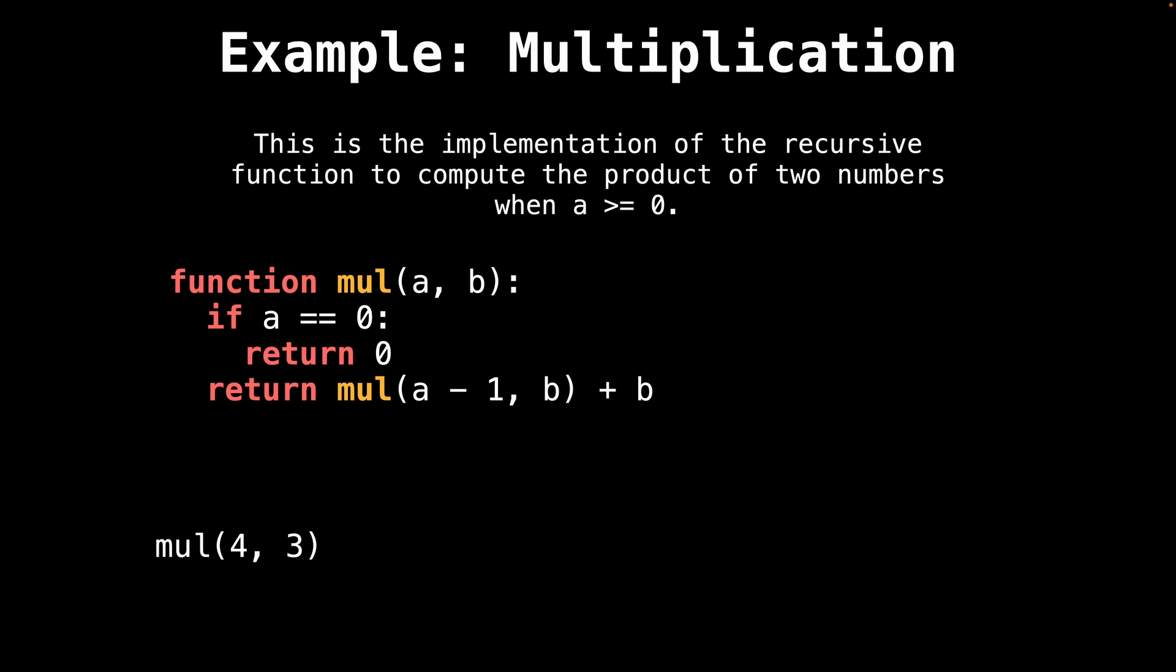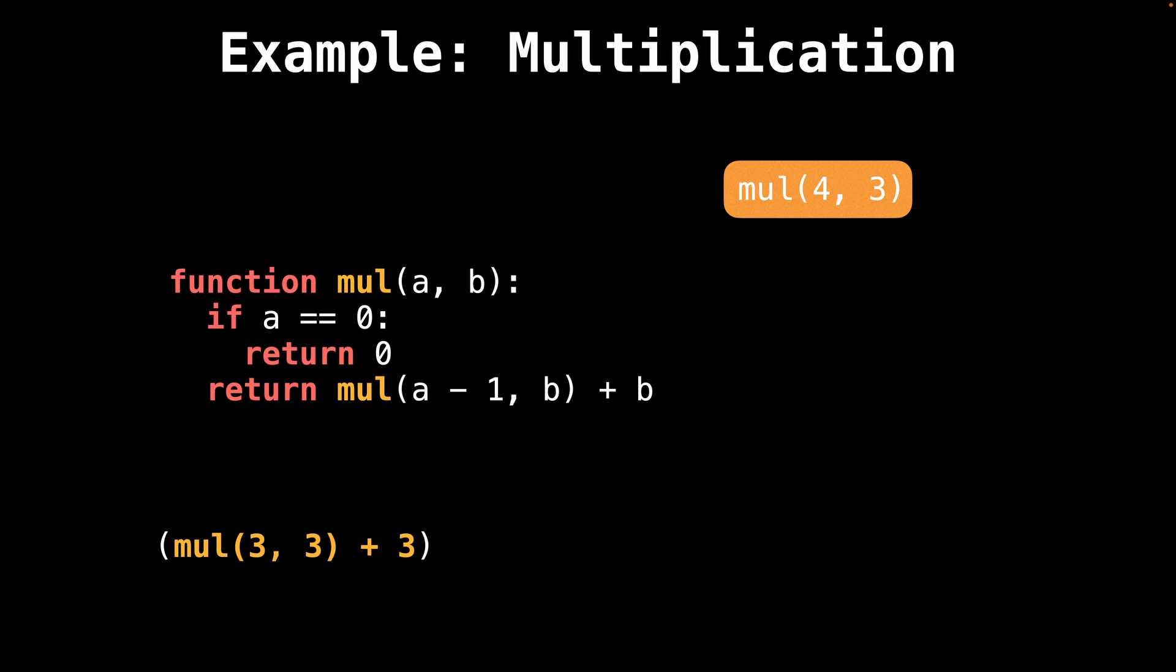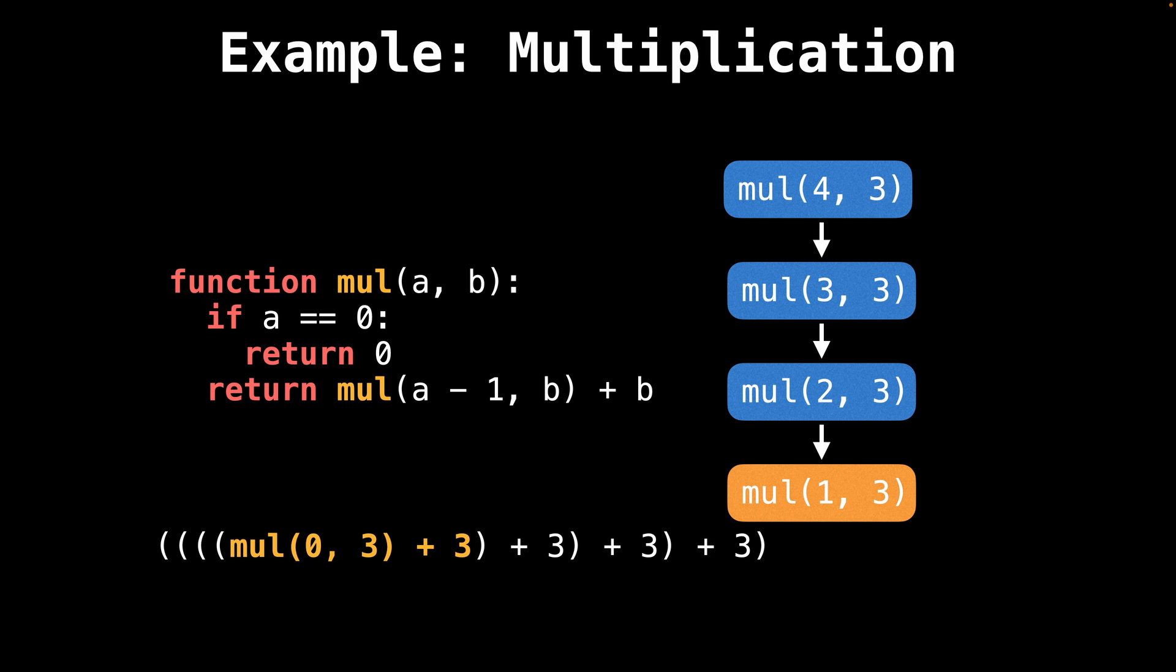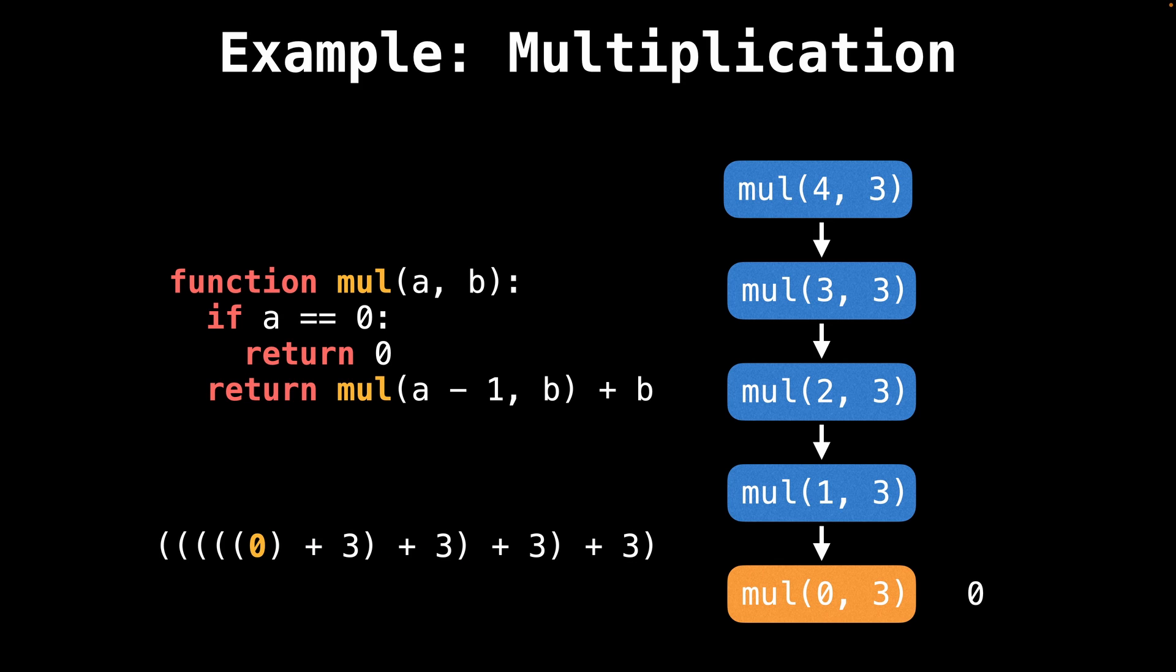Let's now take a look at what happens when this function is actually called. Suppose we call the multiply function with a equals 4 and b equals 3. When a is 4 and b is 3, we add 3 to the sum and recursively call the multiply function reducing a by one. When a is 3, we add 3 to the sum and recursively call the multiply function reducing a by one. When a is 2, we add 3 to the sum and recursively call the multiply function reducing a by one. When a is 1, we add 3 to the sum and recursively call the multiply function reducing a by one. When a is 0, we hit the base case and return zero from the function, at which point the recursion begins to unwind and we start summing up the total.